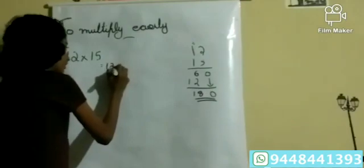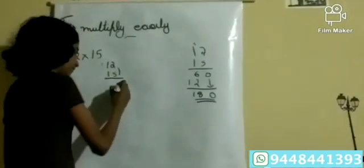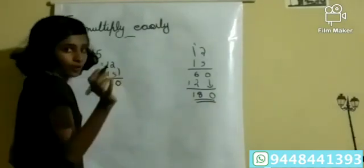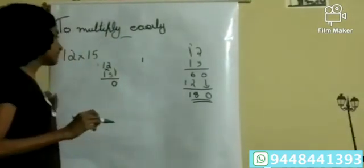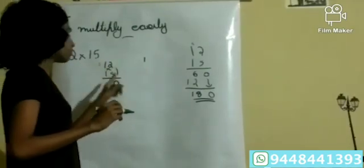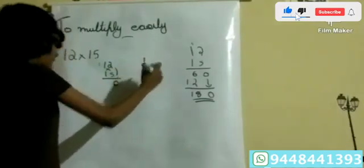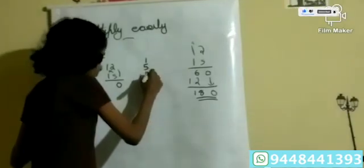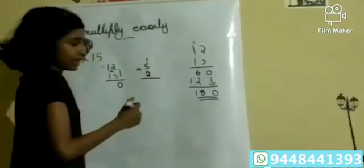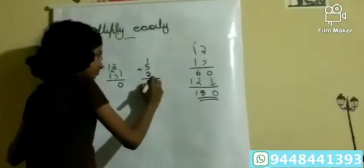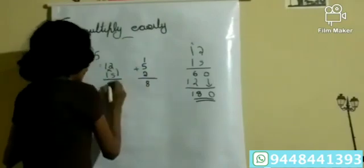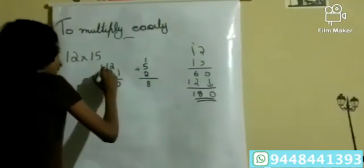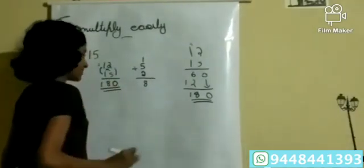We write 12 into 15. Multiply 2 into 5, that means 10 — write only 0 and carry 1. Then do cross multiplication: 5 into 1 is 5, and 1 into 2 is 2. Add them: 1 plus 5 is 6, plus 2 is 8. Then the answer digit is 8. Then multiply 1 into 1 to get 1. So the final answer is 180.